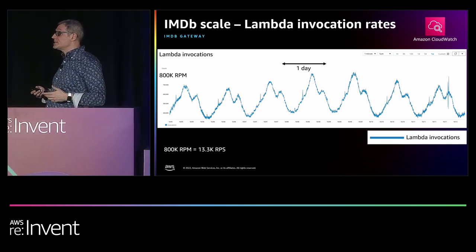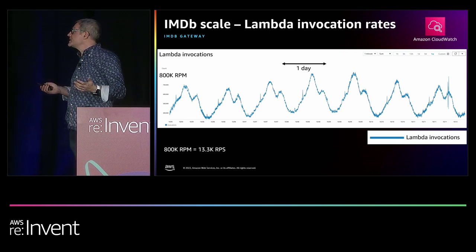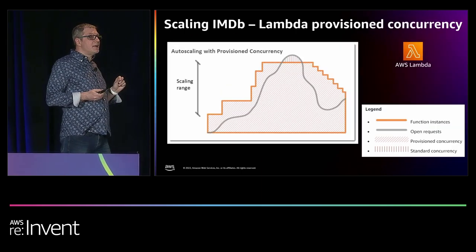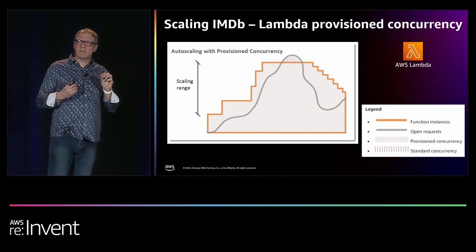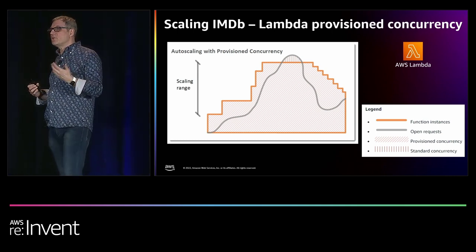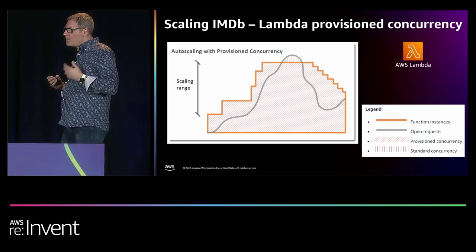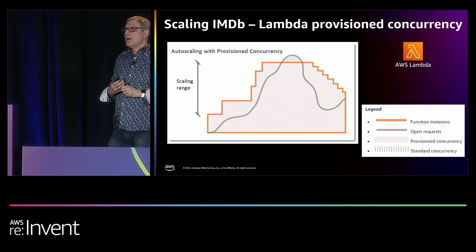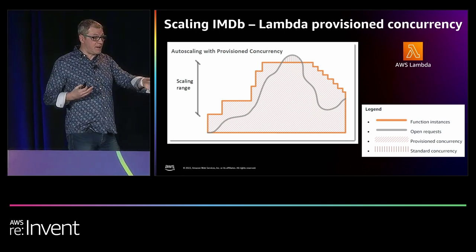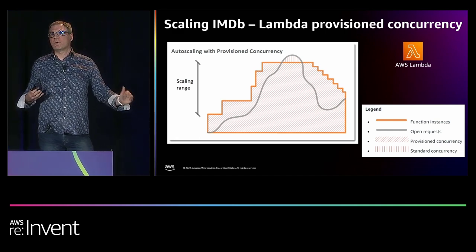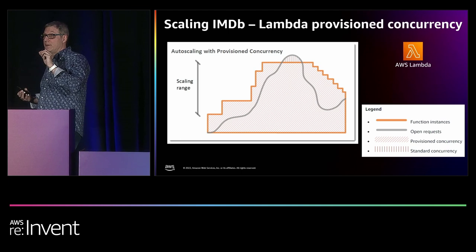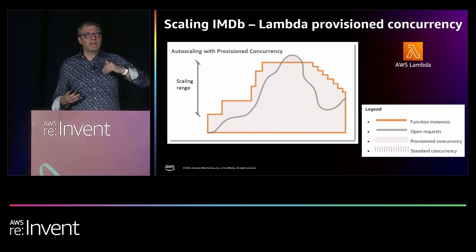Lambda just scales — every request it gets, it spins up a Lambda. But with certain runtimes, when spinning up a new Lambda there's some latency involved — that's called cold start. IMDB didn't want cold starts, so they used provision concurrency. With provision concurrency you specify a number of Lambdas to keep warm — these warm Lambdas won't have cold start. You pay for that, but a fraction of what it would cost to actually run the Lambda. Rather than specifying a flat 800,000 which would be wasteful, the provision concurrency scales up and down in a stepwise fashion alongside the actual Lambda invocations.